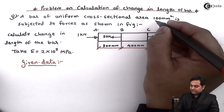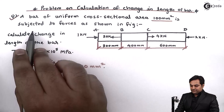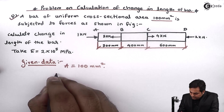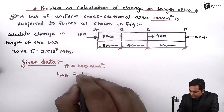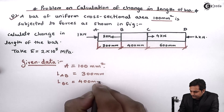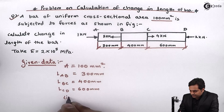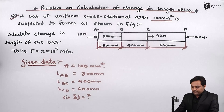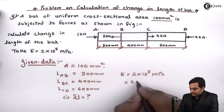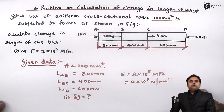Writing down the given data: the bar has uniform cross-sectional area, so A = 100 mm² throughout. The lengths are L_AB = 300 mm, L_BC = 400 mm, L_CD = 600 mm. We need to calculate the change in length of the bar, denoted by delta L. Young's modulus E = 2×10⁵ N/mm², since 1 MPa = 1 N/mm².